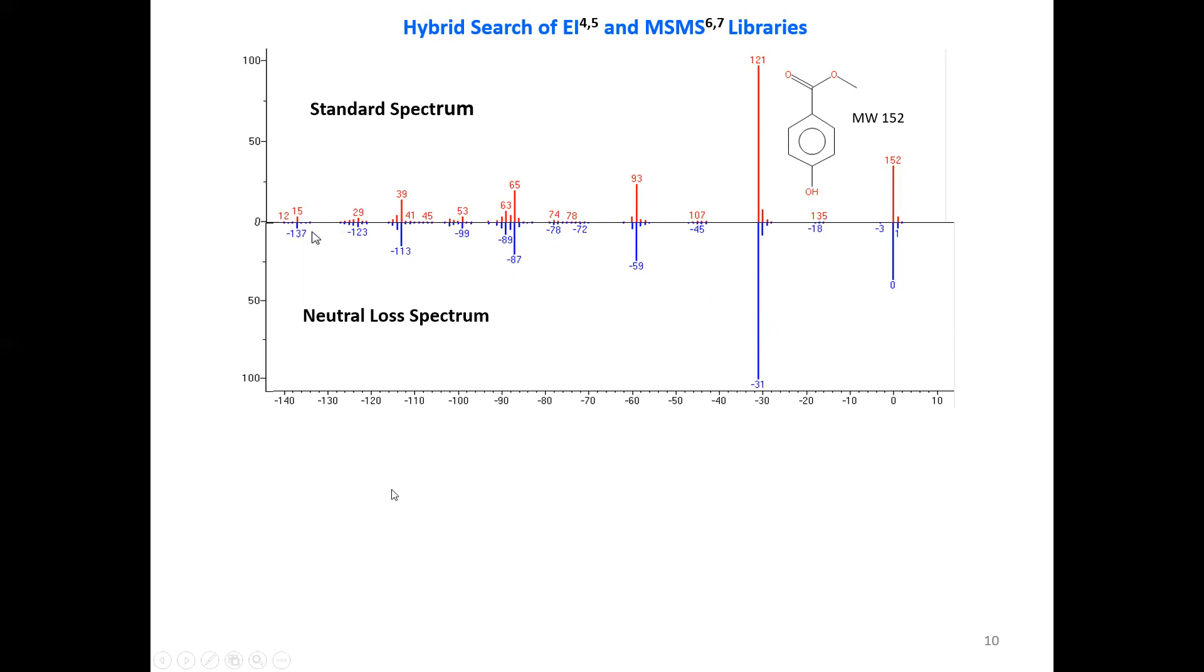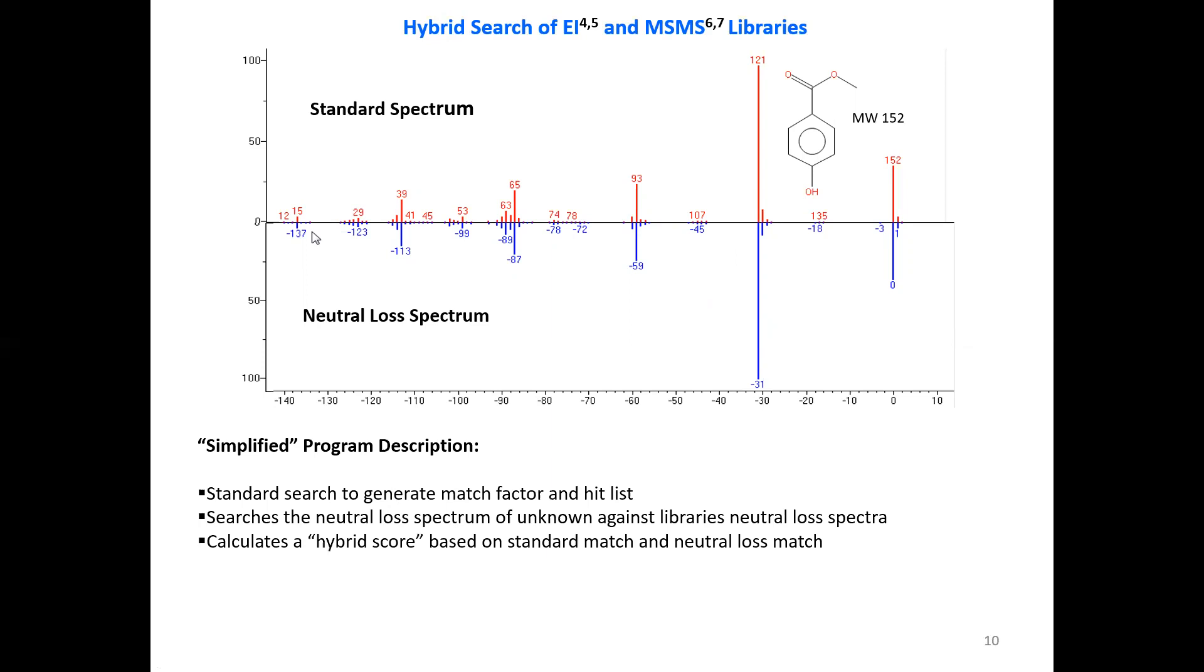So what does it do with this? This is somewhat simplified, but the standard search is used to generate the standard match factor and hit list. Then it searches the neutral loss spectrum of the unknown against the library's neutral loss spectra. It calculates a hybrid score. It takes the original score from the standard search and calculates the neutral loss search and then creates a hybrid score that's weighted properly to get a final factor or search or hit. Also each compound in the list has a delta mass associated with it, which is the difference in the molecular weight of the unknown and the library hit.